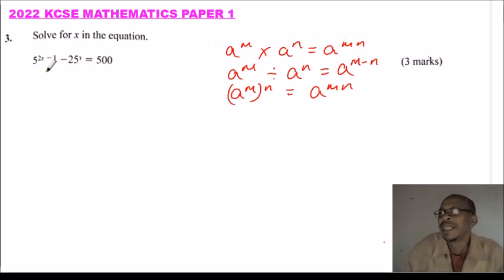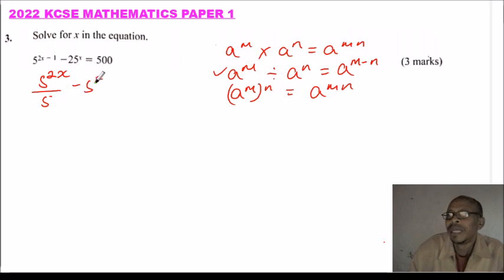So looking at this, we can write it as 5^(2x). We apply this rule. When we have minus, then we say it is divide. 5^(2x) divided by 5 minus this. We say it is 5 squared. And we multiply by x. So we apply that rule, equals 500.